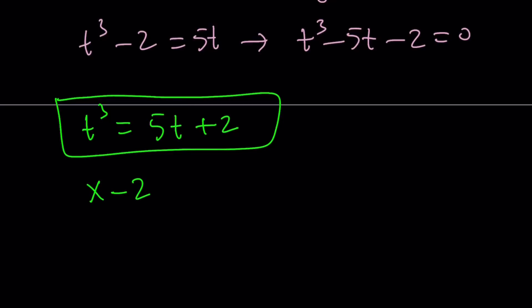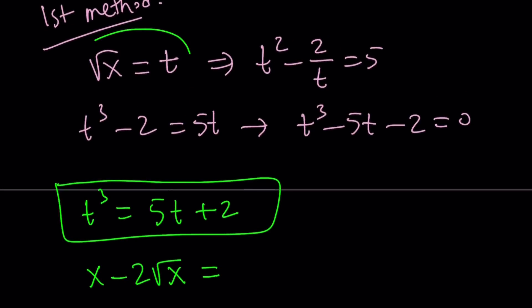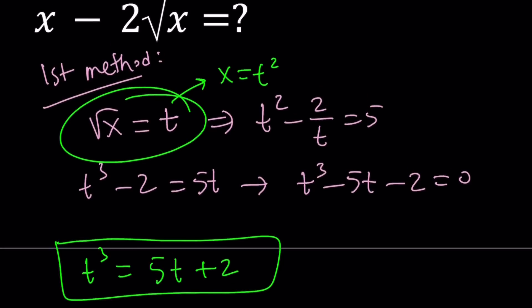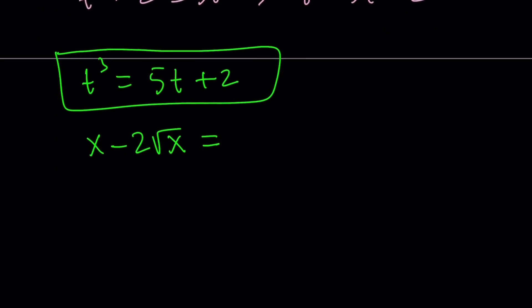Well, x minus 2 times the square root of x is what I'm looking for. But since square root of x is equal to t, that means x is equal to t squared. So I need to replace x with t squared. That gives me t squared minus 2t.